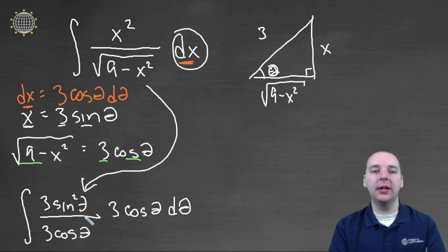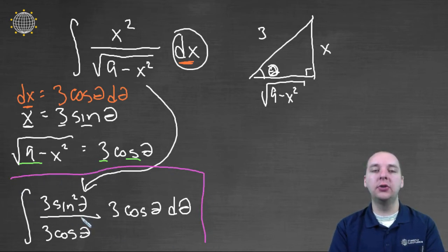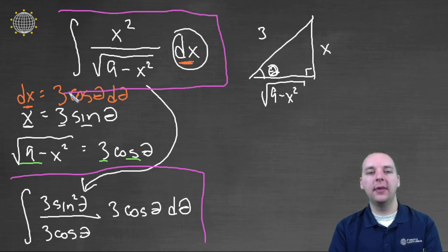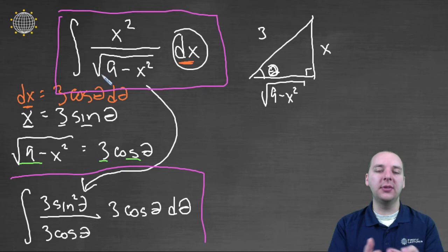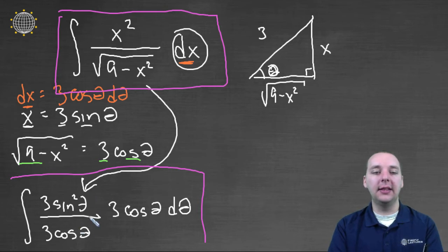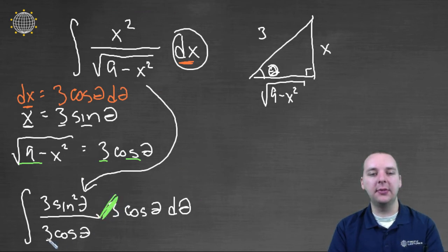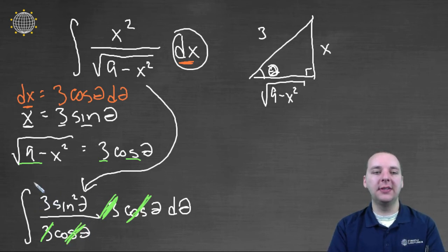This is now a trig integral — we've translated an integral with radicals into an integral with trig functions. That's how trig substitution works. Looking at the result, I see some nice algebra: the 3's cancel and the cosines cancel. So all we have left is the integral of 3 sine squared theta d theta.